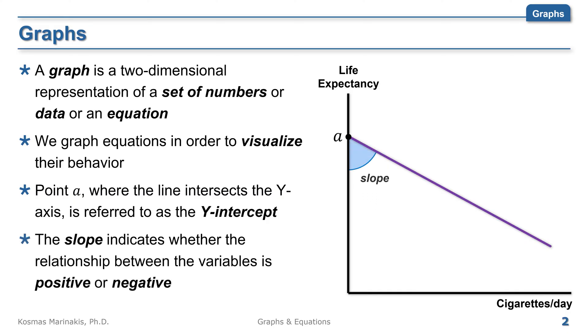The slope of the line shows whether the relationship between the variables on the axis is positive or negative. Let's talk a bit more about the slope. Consider two variables, x and y.